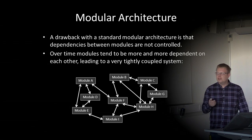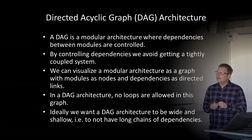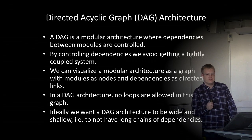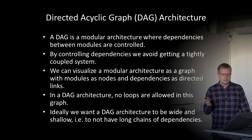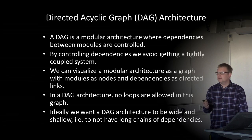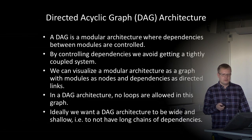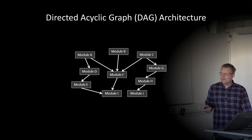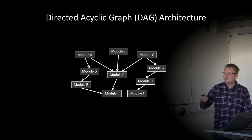We can build upon the modular architecture to make less coupled systems. The next step is to use a Directed Acyclic Graph — or DAG — architecture. It is a modular architecture where dependencies between modules are controlled, helping us avoid a tightly coupled system. We can visualize the architecture in a graph with modules as nodes and dependencies as directed links. In a DAG architecture, no loops are allowed in these graphs. Ideally, we want the architecture to be wide and shallow to avoid long chains of dependencies.